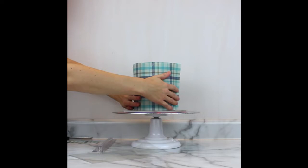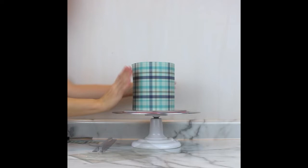I frosted and crumb coated my cake with my vanilla buttercream recipe, which you can find on my website, and let it chill in the fridge for 30 minutes to get it nice and solid.